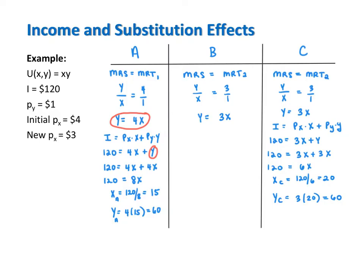The compensated budget line allows the price of X relative to Y to change from what it was at bundle A, but undoes the change in purchasing power also caused by the change in the price of X. The income behind the compensated budget line is not $120, so the next step for finding bundle B must be different. We know bundle B is a point of tangency, and we also know it's on the same indifference curve as bundle A.